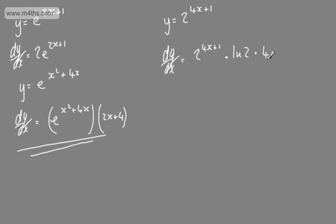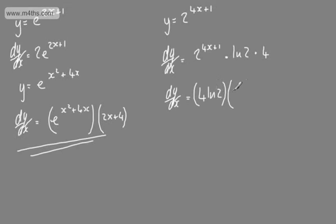We can write that dy by dx is going to be 2 to the power of 4x plus 1, multiplied by the natural log of 2, and then multiplied through by the derivative of the inside function, which is just going to be 4. So dy by dx is going to be 4 times the natural log of 2 — or you could manipulate that to the natural log of 16 — multiplied by 2 to the power of 4x plus 1. So that is the derivative.